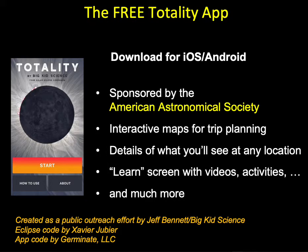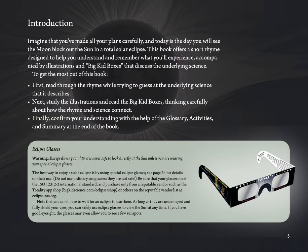One more note before we get into the book: you, or your parents, will also want to get the free Totality app. You'll see a few screenshots from the app as we read the book. You'll need special eclipse glasses if you want to look at the sun, either during an eclipse or at any other time. Just be sure that you get them from a reputable source, such as the ones you can purchase through the Totality app shop screen or any of the vendors listed on the American Astronomical Society's Eclipse website.